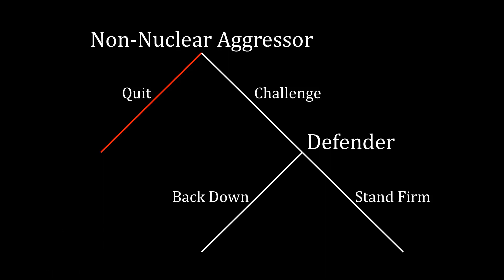Now that we understand what compellence is in isolation, we can define what nuclear compellence is. In particular, it is the causal effect of nuclear weapons allowing an aggressor to challenge the status quo successfully against the defender. Imagine a hypothetical country with no nuclear weapons — in that situation, this country would just choose to quit straight away, or it would challenge and the defender would stand firm. In either of these cases, we are not having an instance of successful compellence.